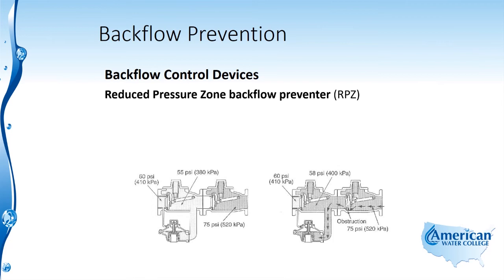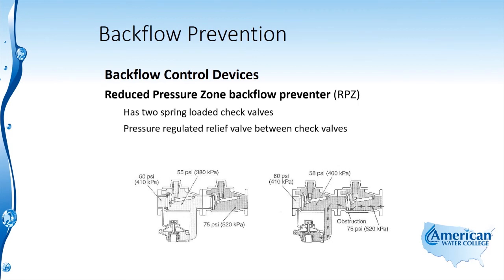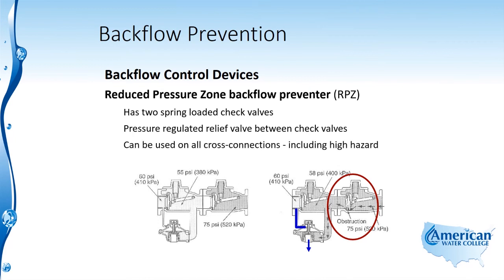The next type of backflow control device is the reduced pressure zone backflow preventer, or the RPZ. The RPZ has two spring-loaded check valves and a pressure-regulated relief valve between the check valves. If a back pressure condition is sensed, the relief valve will open up and create an air gap between the two check valves. This type of device can be used on all cross-connections, including high-hazard connections, and is considered equivalent protection to an air gap because of this air gap created between the two check valves.